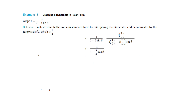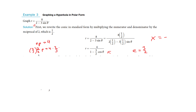Let's try another one. We need to get this into standard form, so we multiply by one half everywhere. This gives us our standard form with E equal to three halves — the coefficient in front of the cosine. Because it's cosine, the directrix is x-related. There's a minus in front. To find p: E times p equals 4, and we know E is three halves. Solving, p equals eight thirds. So we have our directrix x equals negative eight thirds and eccentricity three halves.